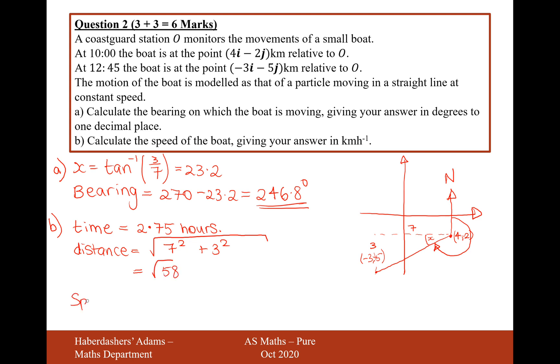So now the speed is going to be distance divided by time, which is going to be root 58 divided by 2.75, which equals 2.77 kilometers per hour. And there we are, that's the answer for this question here. So that's 6 marks in total for question 2. Let's now move on to question 3.